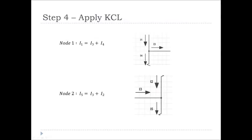Step 4 of nodal analysis is applying KCL to each of the nodes. We can see that at node 1 we have I1 entering the node and I3 and I4 leaving. Similarly at node 2 we have I3 and I2 entering a node, but I5 is leaving the node.